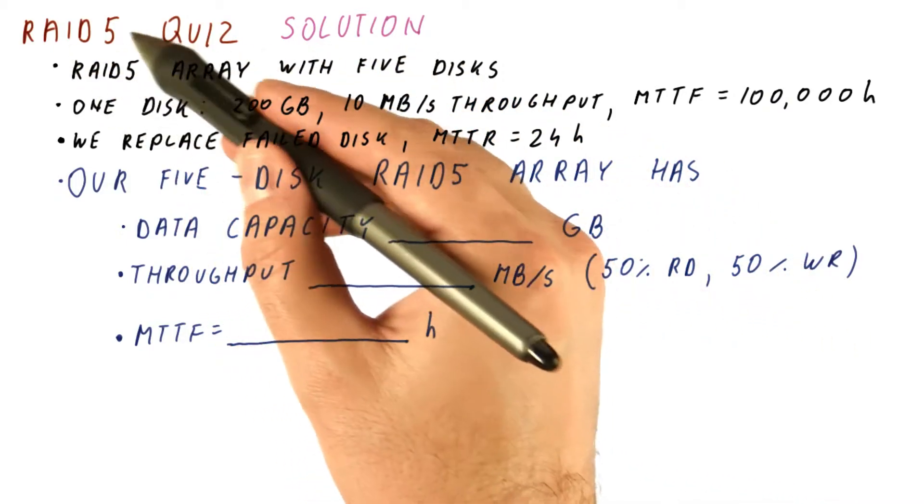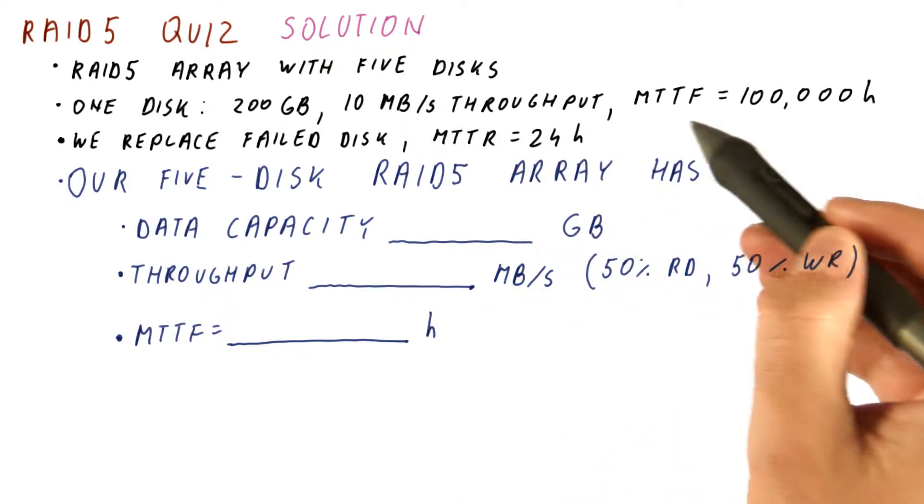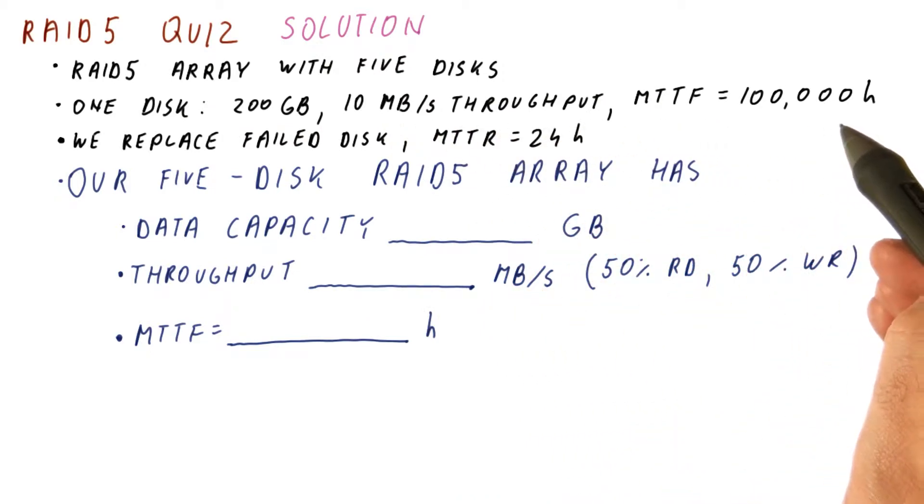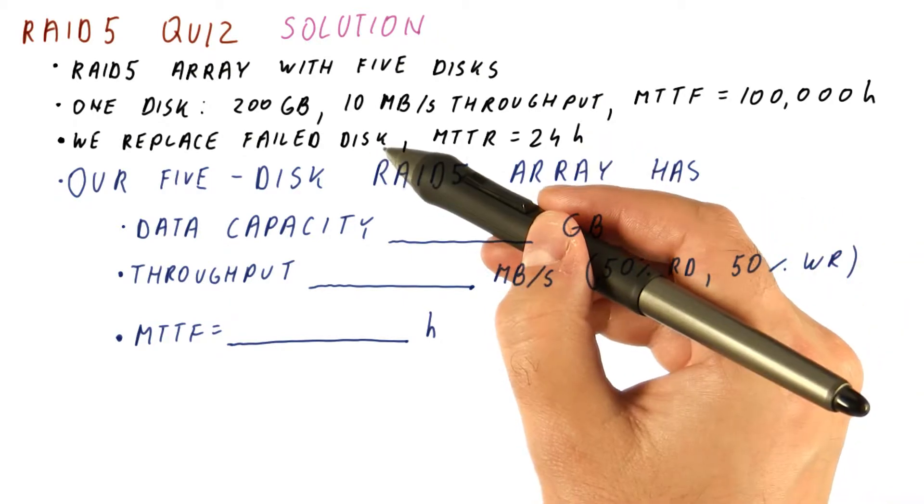Let's look at the solution to a RAID 5 quiz, where we had a five disk array with disks similar to what we've seen in quizzes before. And the replacement is 24 hours once a disk fails.